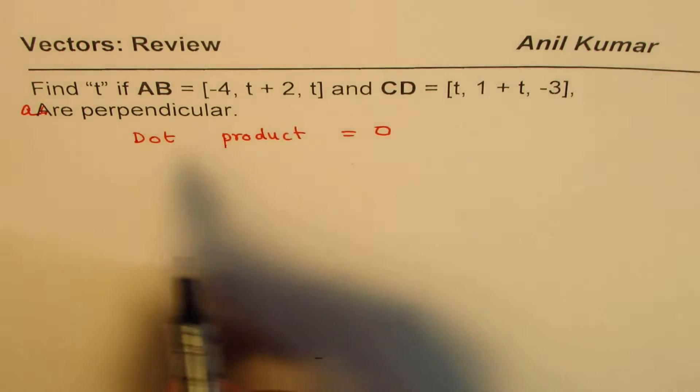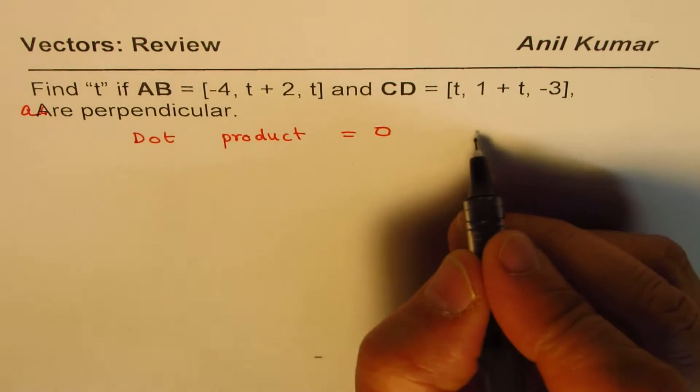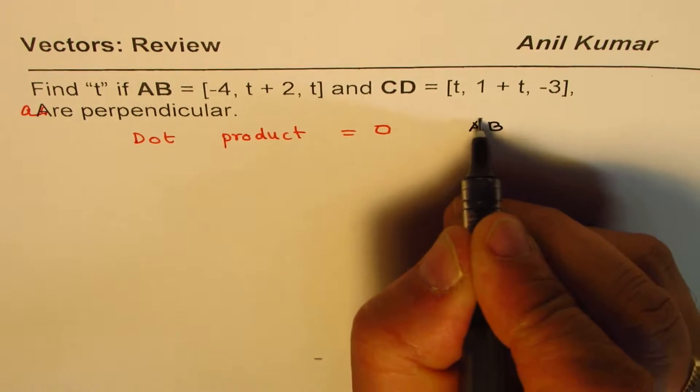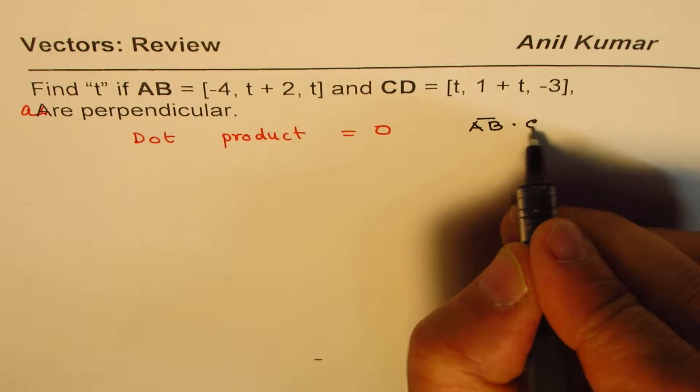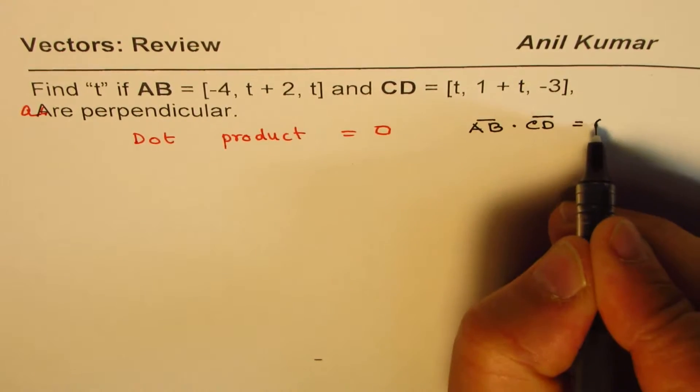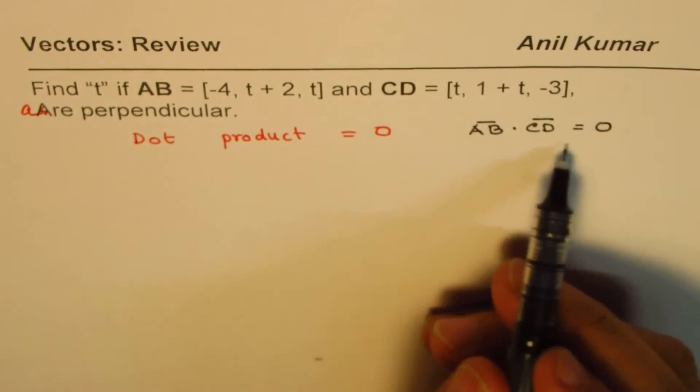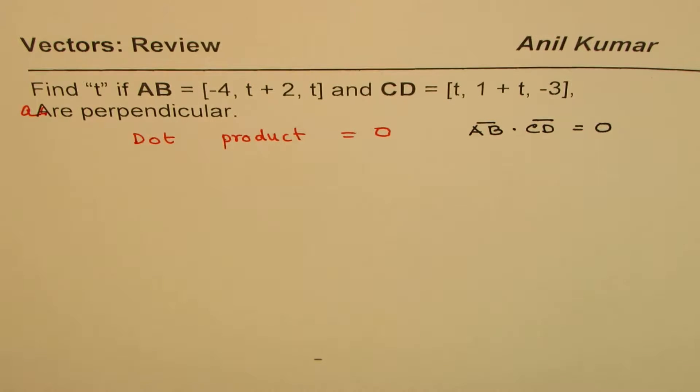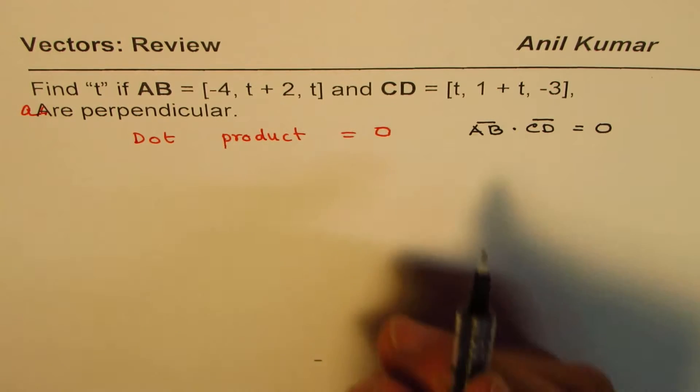So, we have two vectors AB and CD. We will say AB dot CD is equal to 0. Once we have only one variable t, we can always find the variable t. You can pause the video, answer the question and then look into my suggestions.